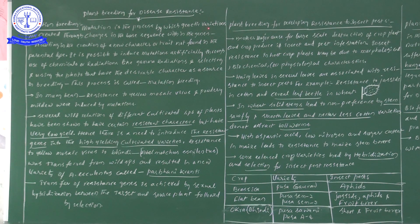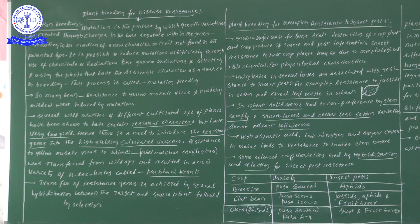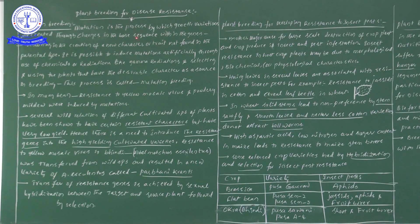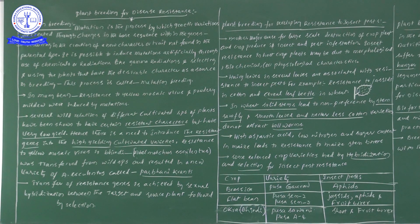Mutation is a process by which genetic variations are created. By using this mutation process we can bring genetic variations through changes in the base sequence within the genes — the nitrogen base sequence — resulting in the creation of new characters or traits.